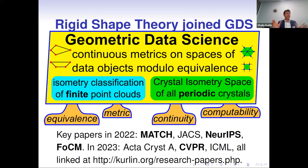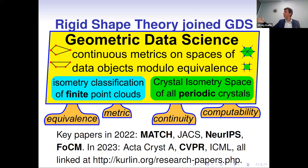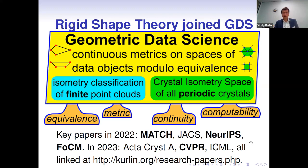In summary, geometric data science considers a general isometric classification problem for periodic structures, describing the Crystal Isometry Space, and more recently solved this problem for finite point clouds of unlabeled points. The problem extends to other data objects and equivalence relations beyond isometry: find the complete invariant, the continuous metric computable on these invariants, and ultimately describe the moduli space.